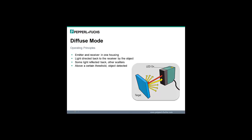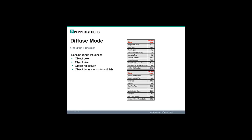Diffuse mode sensors have both the emitter and receiver elements in one housing. Light from the emitter is directed back to the receiver by the object. The object reflects some light back to the sensor and scatters the rest. The object is detected when the light at the receiver is above a specified threshold. Diffuse mode sensors detect objects solely on the energy or intensity of the reflected light. If an object is in the right spot and is reflective enough, then it will be sensed; if not, it won't be sensed.